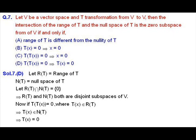We will verify option D. First, let the intersection of range space of T and null space of T be equal to zero — that is, they are disjoint subspaces of V. Let T(T(x)) = 0, so T(x) belongs to the null space of T and also belongs to the range space of T. But we know the null space of T and range space of T have only the common element zero, so T(x) = 0.